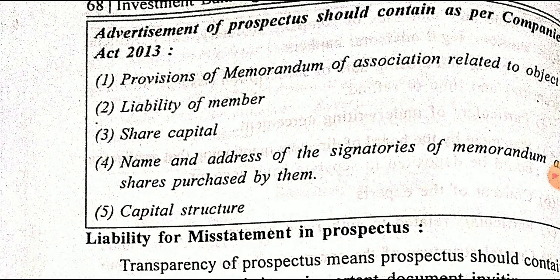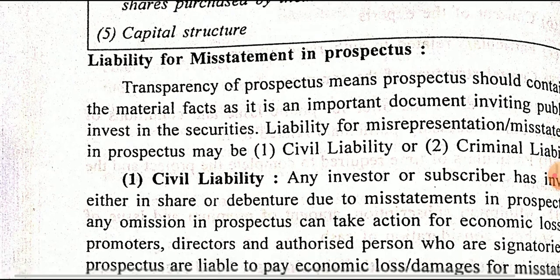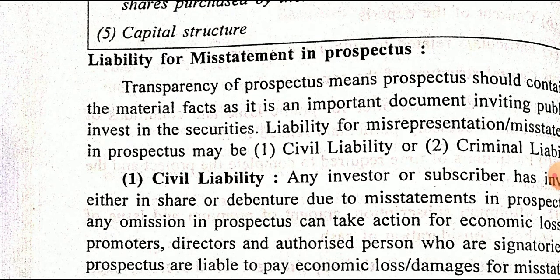The advertisement of the prospectus should contain provisions of the memorandum of association, liability of members, share capital, name and address of the company, and capital structure — meaning the proportion of debt and equity. Liability for misstatement in the prospectus — that is, misrepresentation — must also be considered.